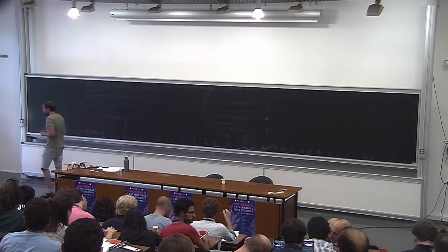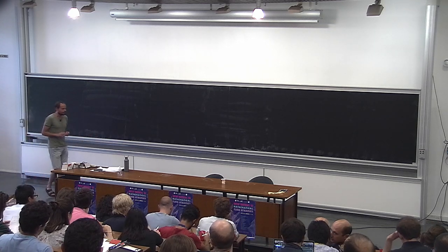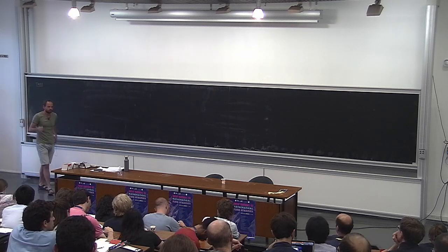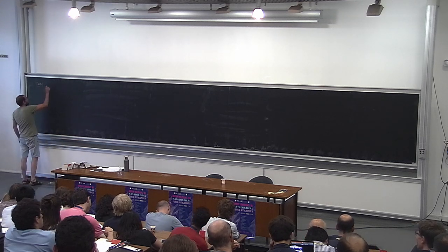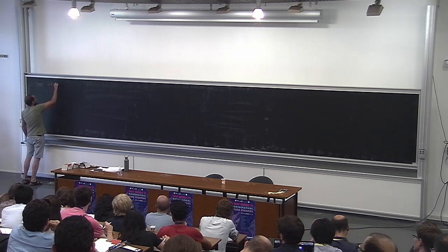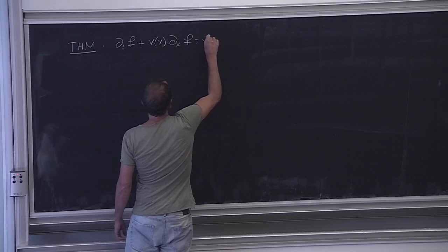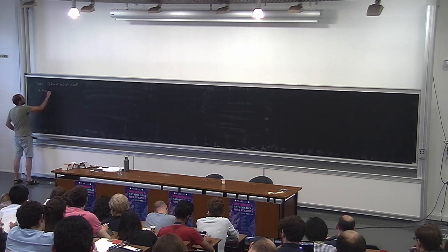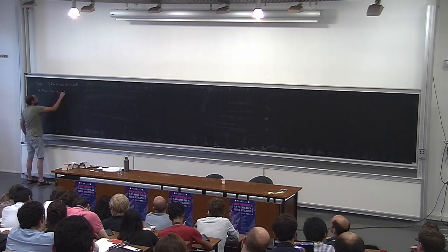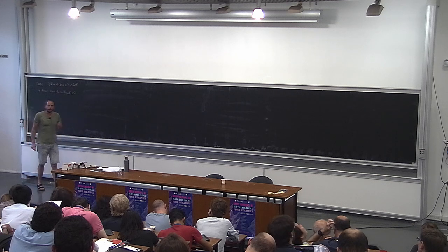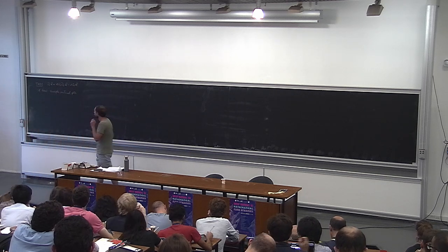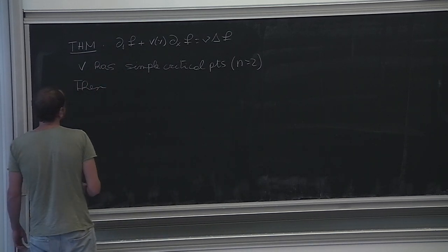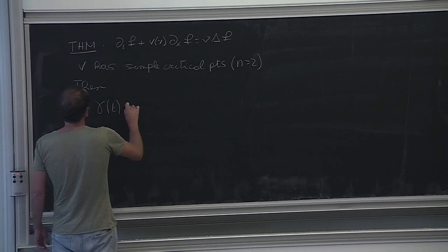Last time I gave an introduction to enhanced dissipation. Today I want to prove the theorem I stated last time in a simple but significant case: suppose the shear flow problem, and suppose that V has only simple critical points — in the notation from last time, that parameter n is 2. Then we know the mixing rate is like 1 over square root of t.